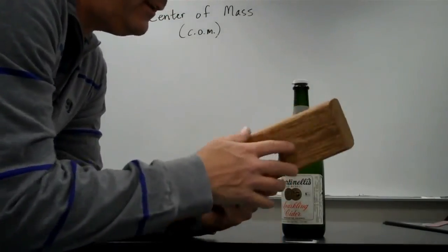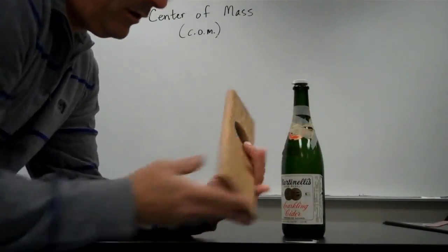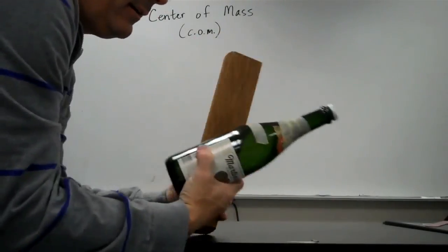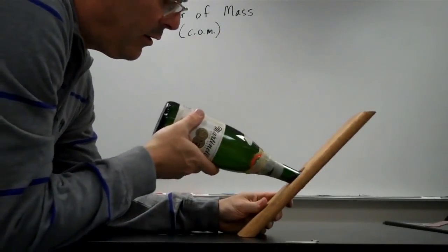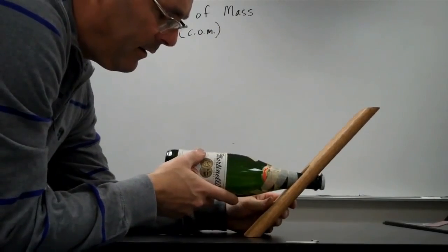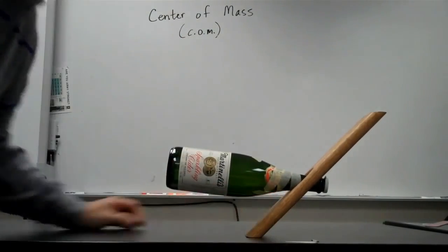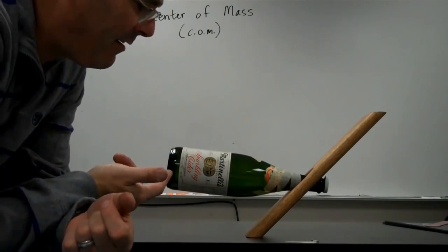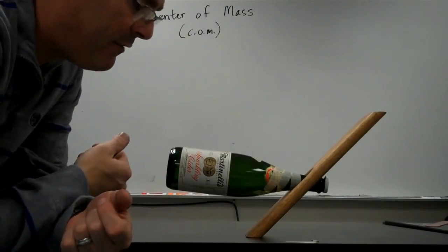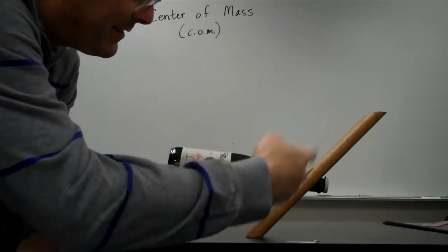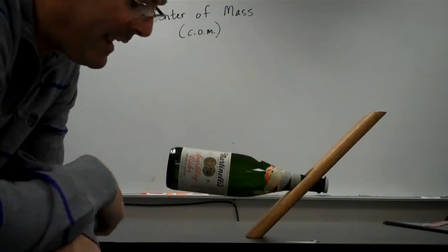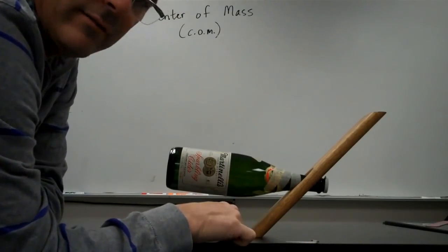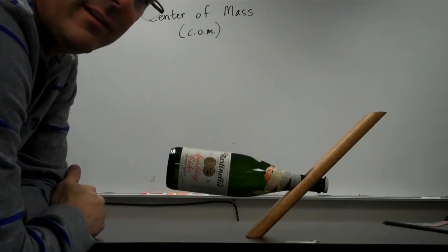Here's an interesting object. It's just a piece of wood with a hole in it, beveled to be flat on both ends at an angle. And I can take my bottle, put it through there, and it balances. What does this tell me about the center of mass or the center of gravity of this system? Well, I know that the center of mass of the wood and the bottle together must be directly vertically above this point of support. Otherwise, it would tip over.